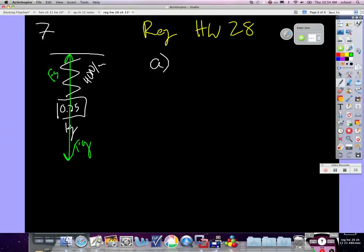For part A, they tell us that the spring is not stretched or compressed. So for part A, X is... Fs, which is equal to negative Kx, that's 0.